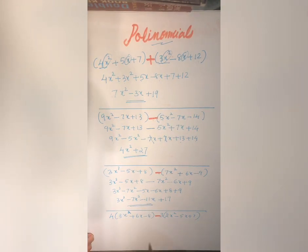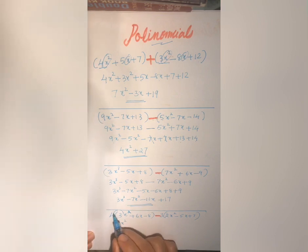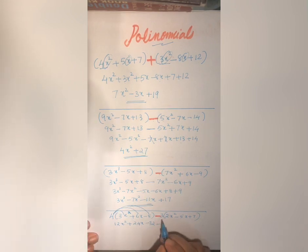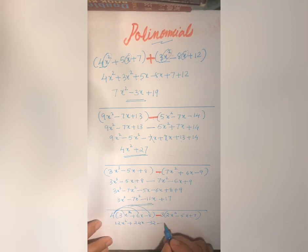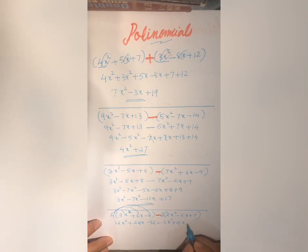In this problem, before subtracting we need to distribute the coefficients. Multiply 4 with all terms inside the bracket: 4 into 3x square is 12x square, 4 into 6x is 24x, 4 into minus 8 is minus 32. Then multiply minus 3 with all terms: minus 3 into 2x square is minus 6x square, minus 3 into minus 5x is plus 15x, minus 3 into plus 7 is minus 21.